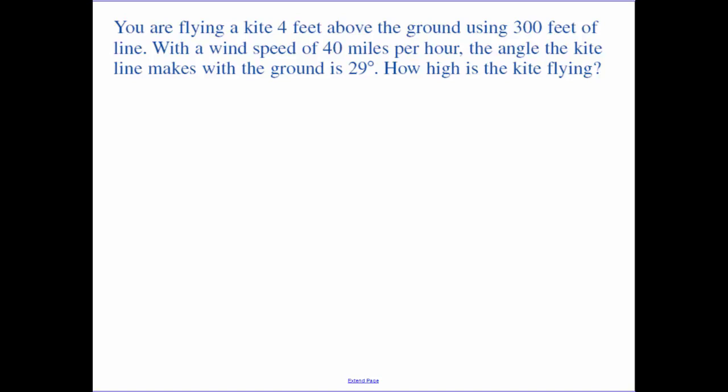Some applications. We're flying a kite 4 feet above the ground using 300 feet of line. With a wind speed of 40 miles per hour, the angle of the kite line makes with the ground is 29 degrees. How high is the kite flying?